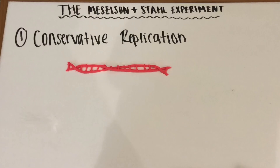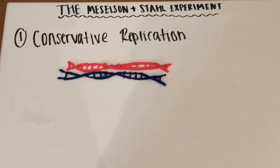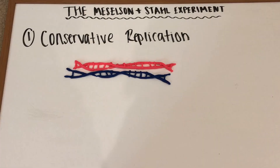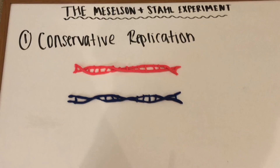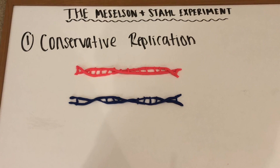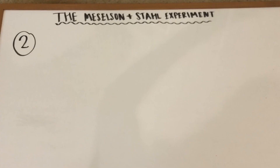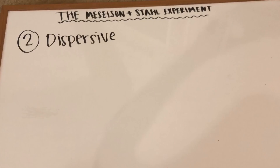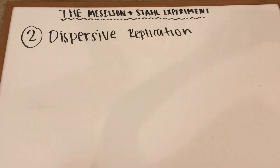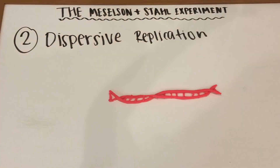The first hypothesis was conservative replication. Here, it was assumed that the DNA completely duplicated itself. The second hypothesis was dispersive replication, where the DNA was believed to segment itself off into certain amounts of nucleotide bases and then make copies of those specific parts.